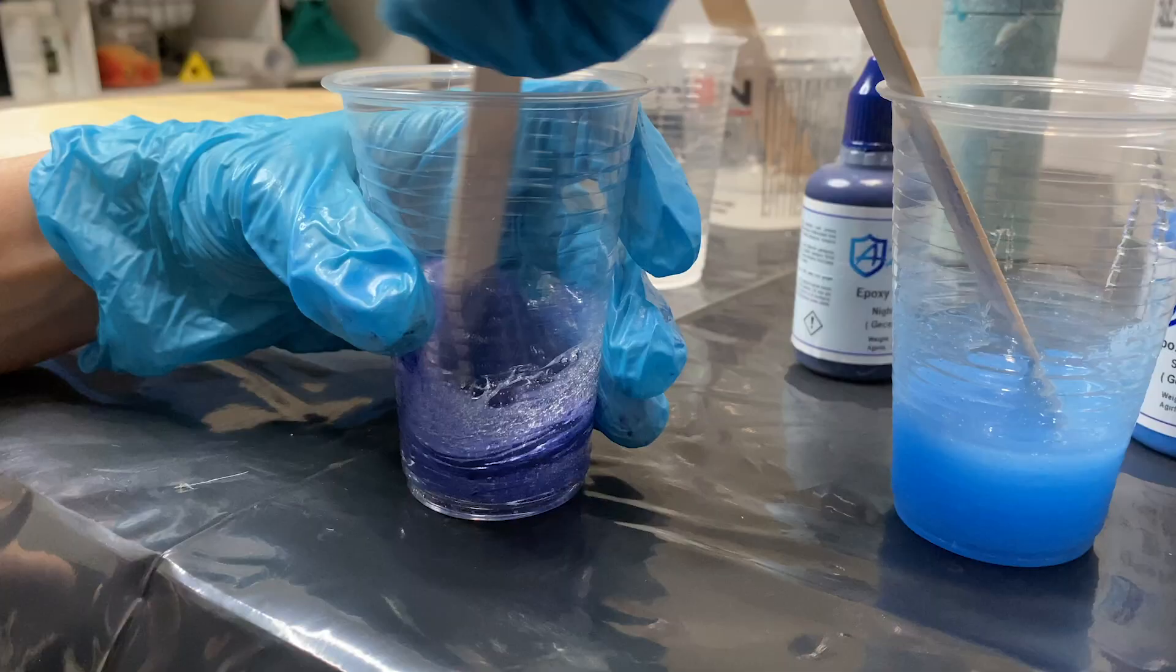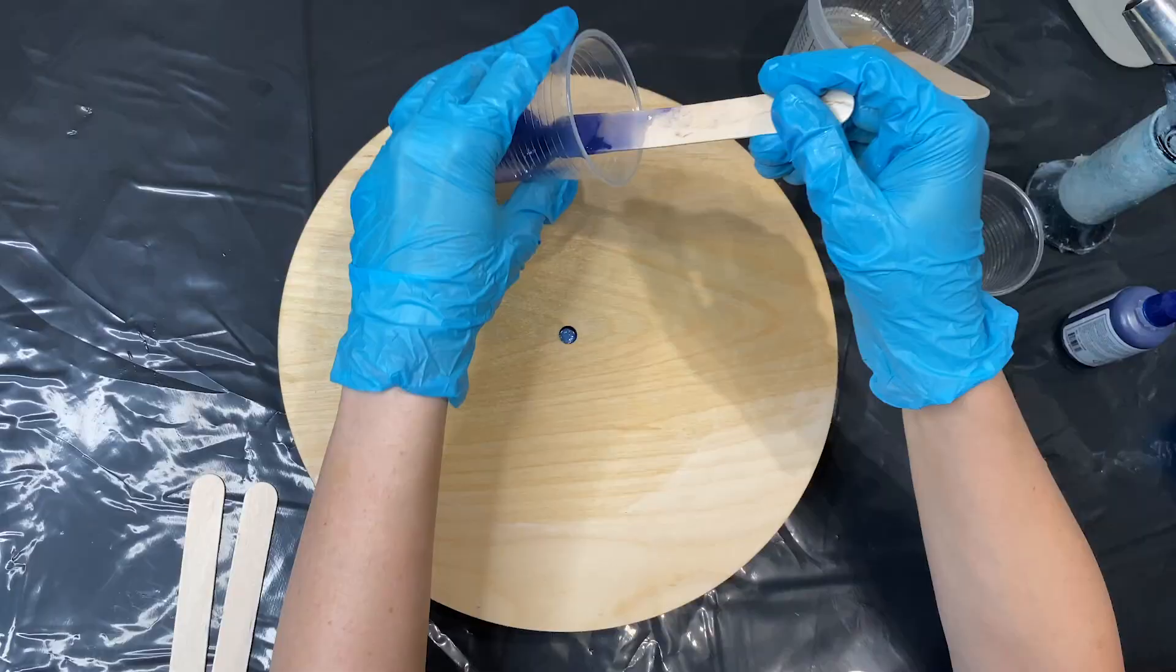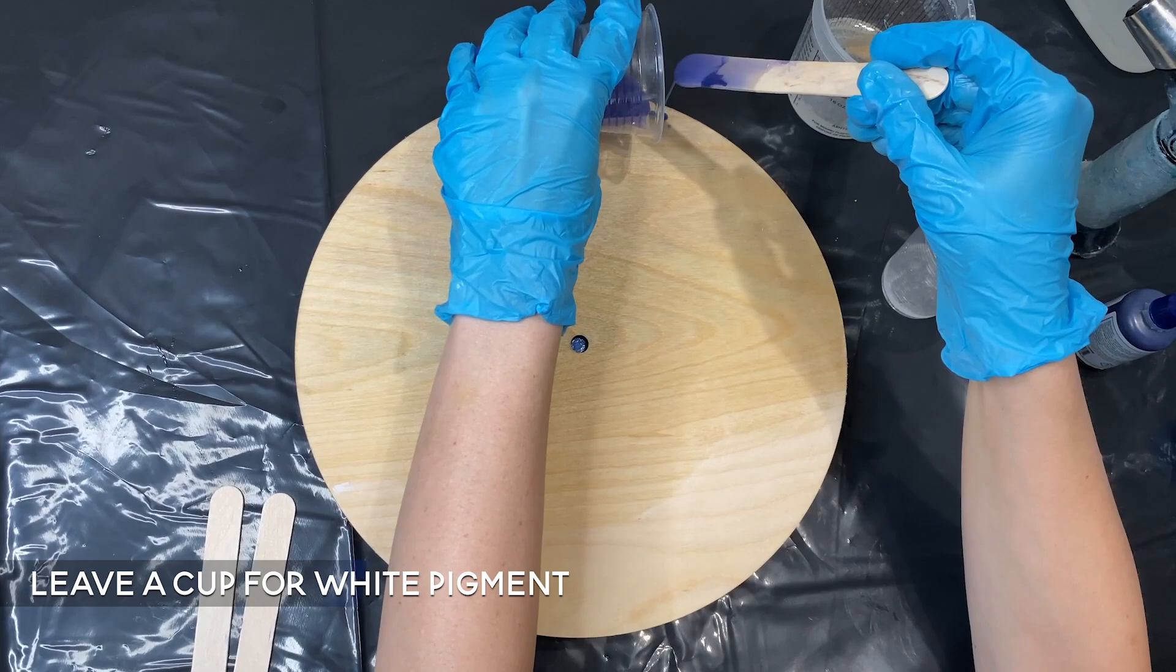Here I am dividing my epoxy into the different color cups. Remember to have a cup for clear epoxy, which you can leave in the first cup, and also for your white.